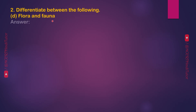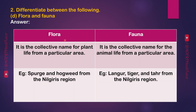Differentiate between Flora and Fauna. Flora: it is the collective name for plant life from a particular area. Fauna: it is the collective name for the animal life from a particular area. Flora Example: Spurge and hogeweed from the Nilgiris region. Fauna Example: Langur, Tiger and Tahr from the Nilgiris region.